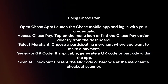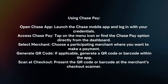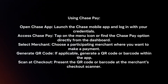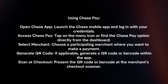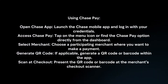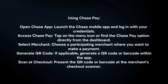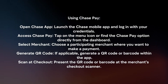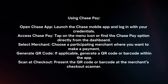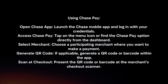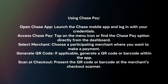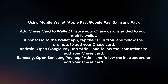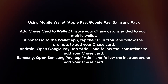Using Chase Pay: Open the Chase mobile app and login with your credentials. Tap on the menu icon or find the Chase Pay option directly from the dashboard. Select a participating merchant where you want to make a payment. If applicable, generate a QR code or barcode within the app and present it at the merchant's checkout scanner.